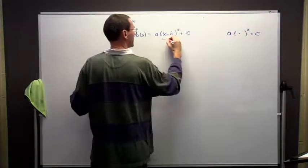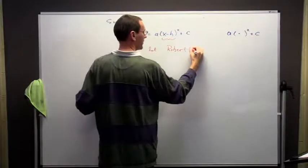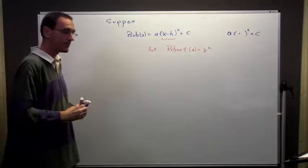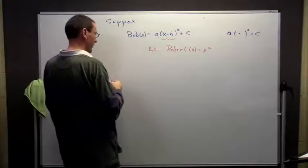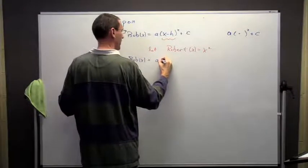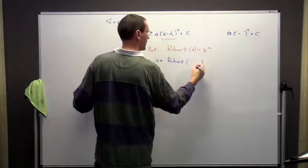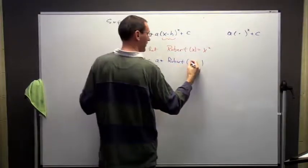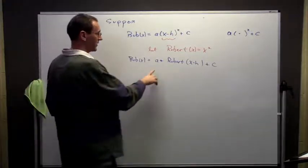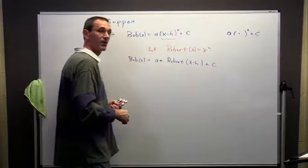So if I focus on this, let me do this, let me let a new function, we'll call it Robert, to be x squared. Then I can think of Bob then, as going to be a times Robert, but I'm not evaluating at x, I'm evaluating at x minus h, plus c. So I can scale it vertically, shift it vertically, and then shift it left and right.